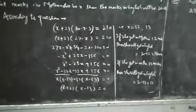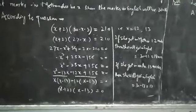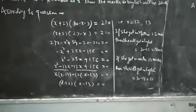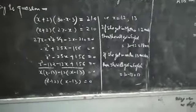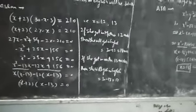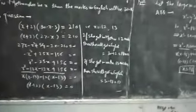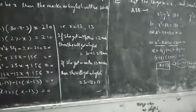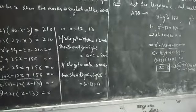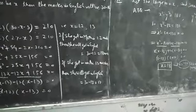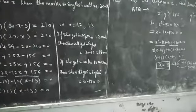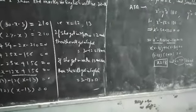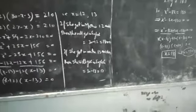Factorize this equation. The factors become (x - 12)(x - 13) = 0, that is x = 12 and x = 13. If Cephali got 12 marks in mathematics, then she got 18 marks in English. If she got 13 marks in mathematics, then she got 17 marks in English.